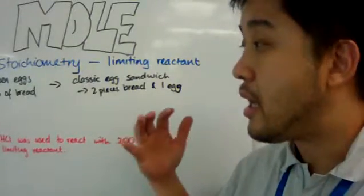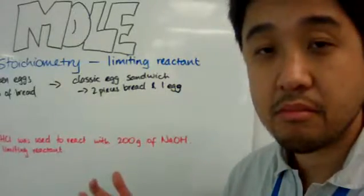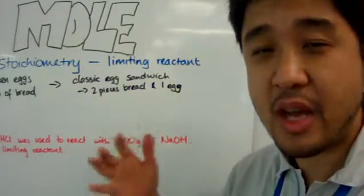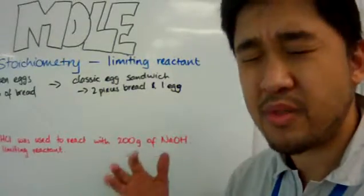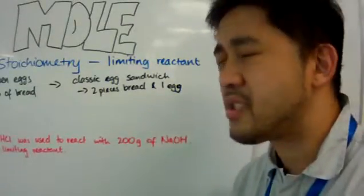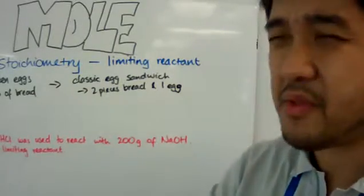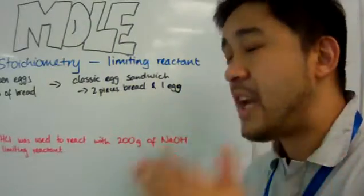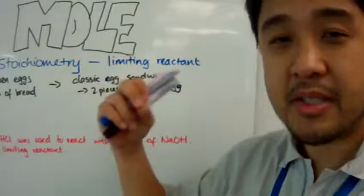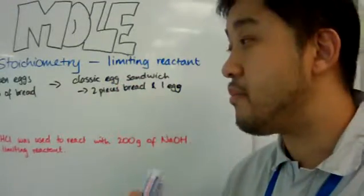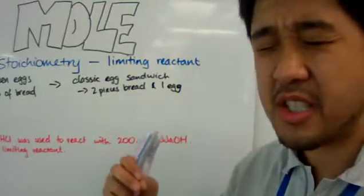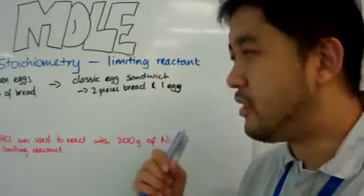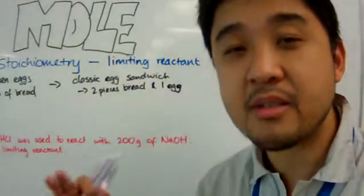How many eggs did you have left? Two. What about slices of bread — how many slices of bread did you have left? Zero. Because you have zero pieces of bread left and you still have eggs remaining, the slices of bread are considered the limiting reactant, while the eggs are the excess reactant. This is exactly the concept of limiting reactant.